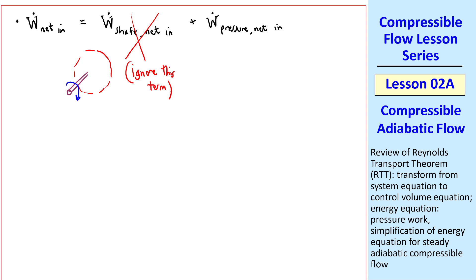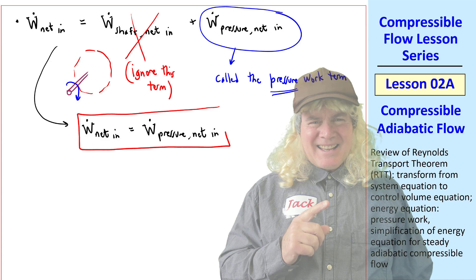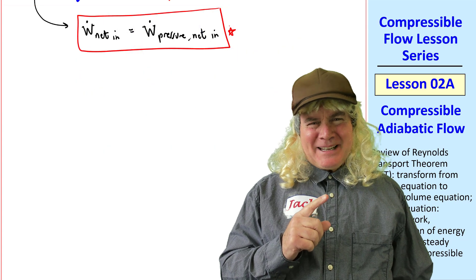We concentrate more on flow in ducts. This term, even though it's a power, a work per time, is often called the pressure work term. In other words, pressure does work on the system. So ignoring shaft work for the problems we'll look at, W dot net in consists only of the pressure work term. Excuse me, sir. What do you mean by pressure work?